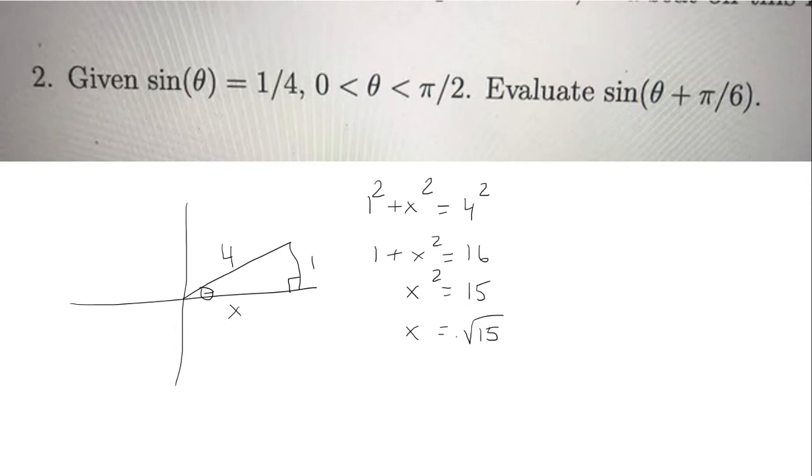Technically we need to do plus or minus, but because we're in the first quadrant we know that x must be positive. And so now we have the whole triangle completed and we can continue with sine theta plus π/6.